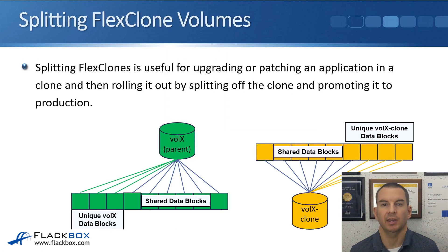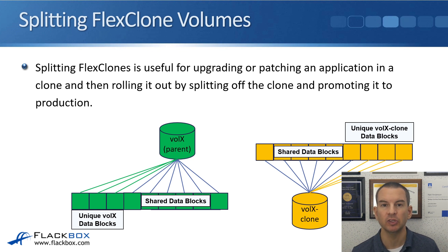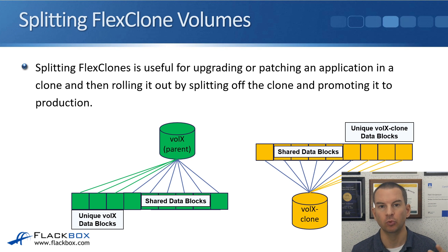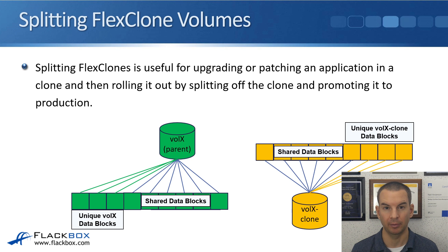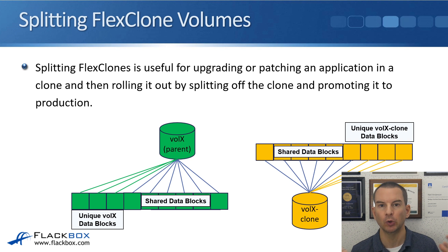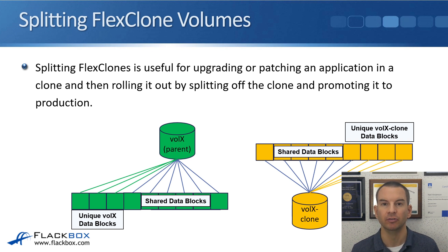One use case for FlexClone is if you have an application using the ONTAP storage and you want to do some kind of update or upgrade to that application, but you're worried it might cause an issue requiring a rollback. What you could do is take a FlexClone of the volume before you do the update, then do the update, and then check that everything is working okay. Once you're happy that everything is working okay and you don't need to do a rollback, you would split the FlexClone volumes.